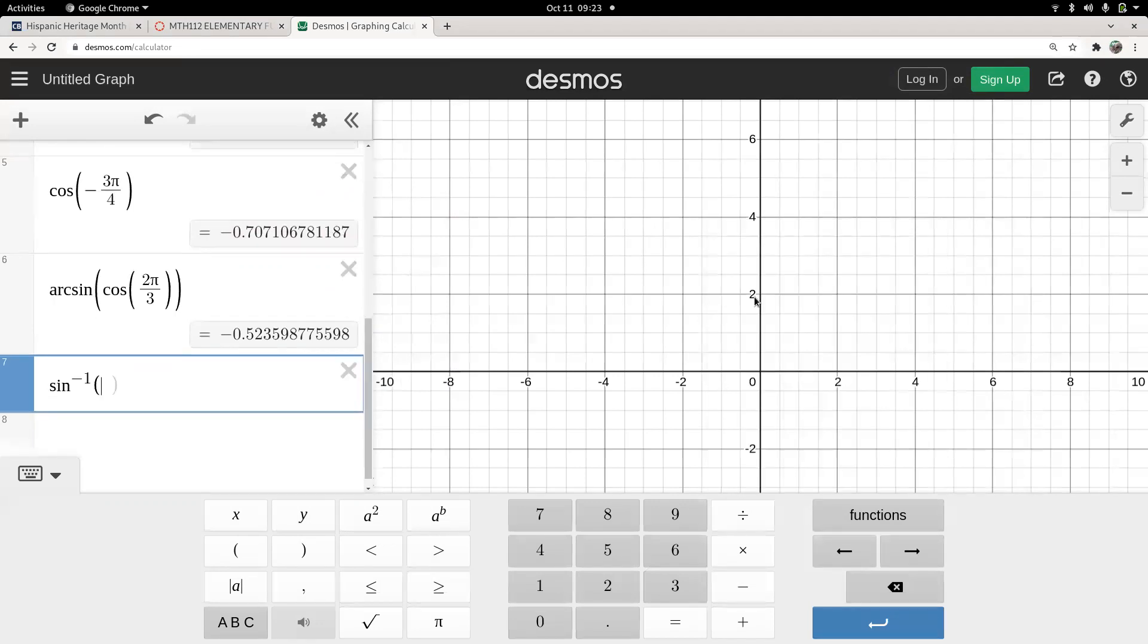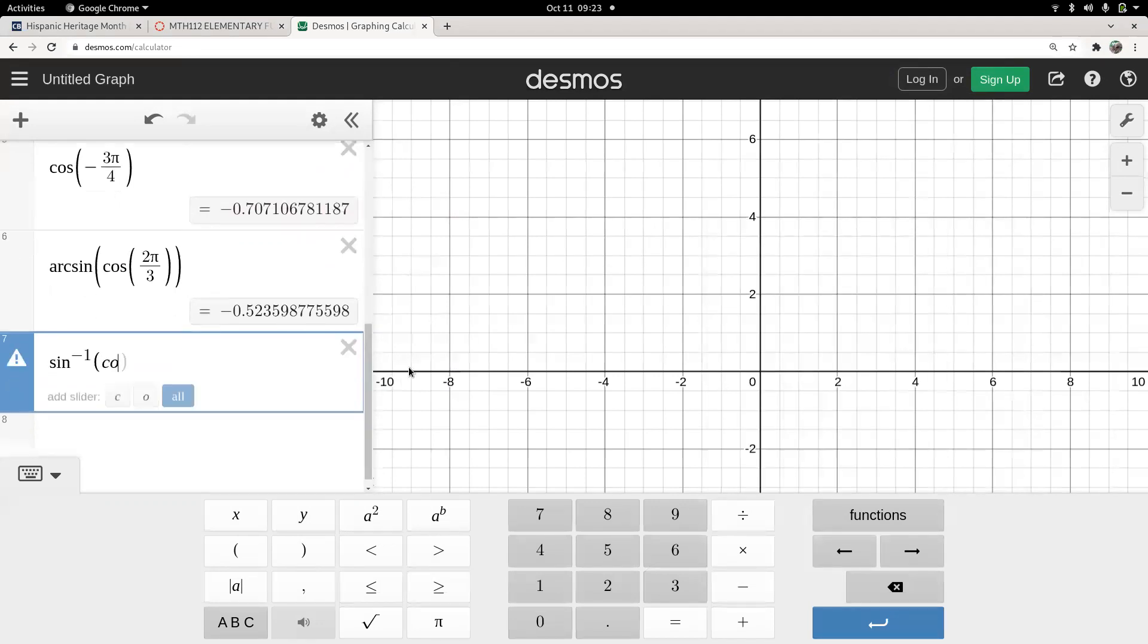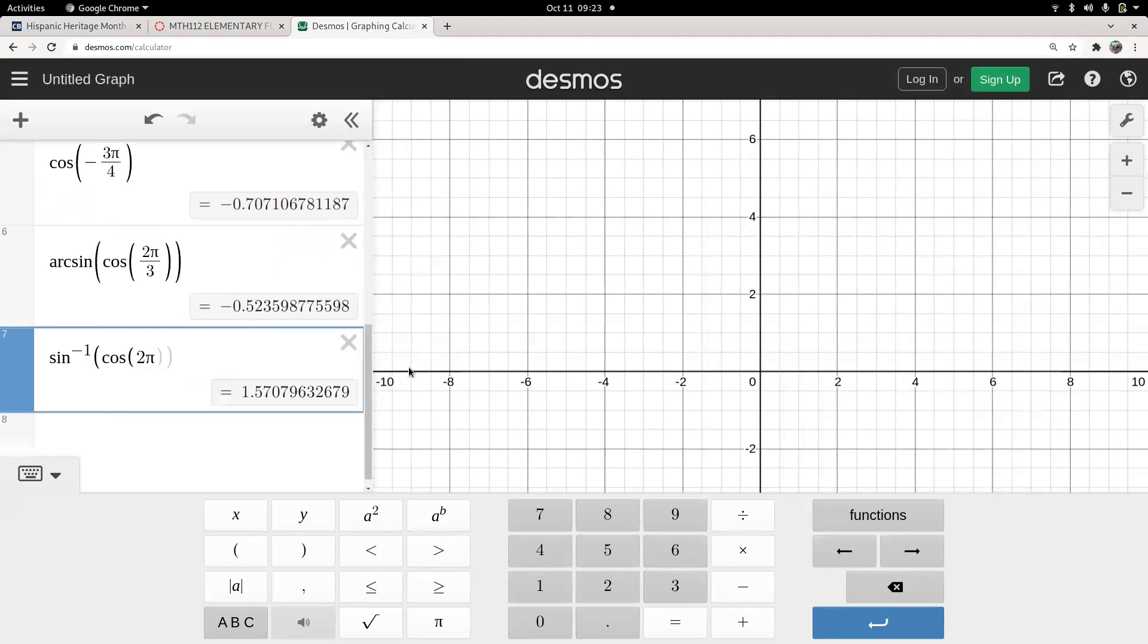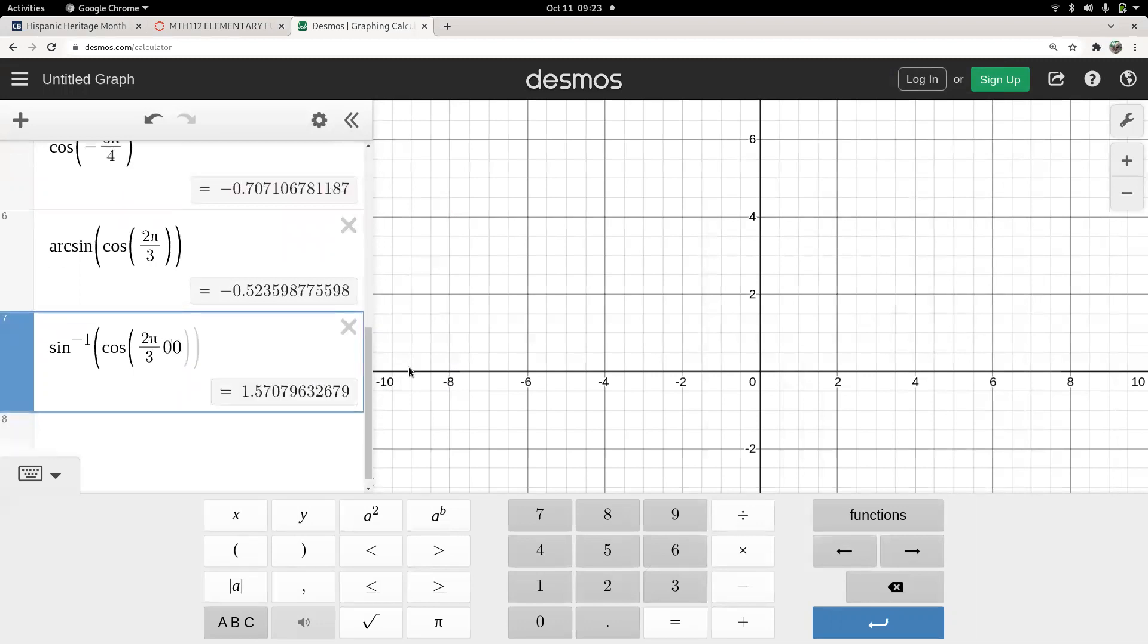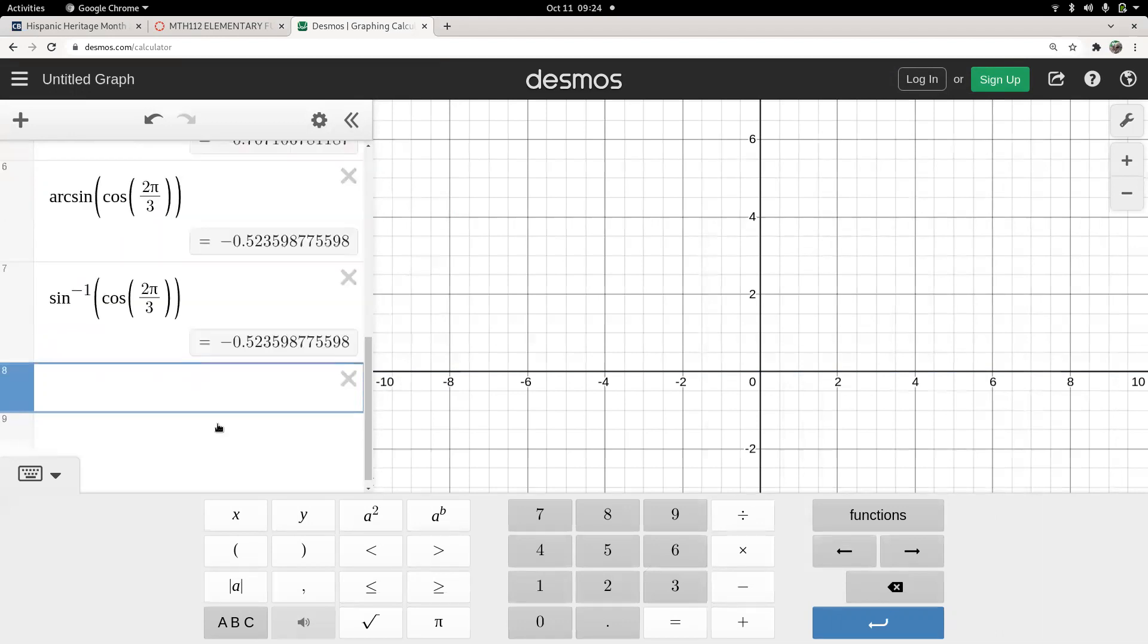So, I could have chosen that, and then cosine 2π over 3, close parenthesis, same number,